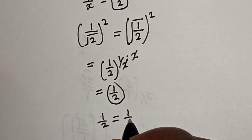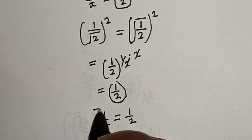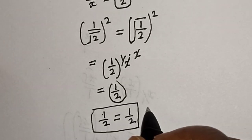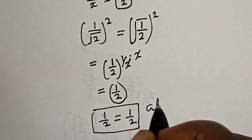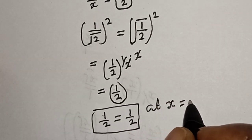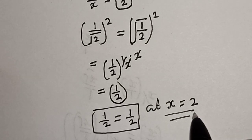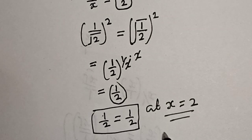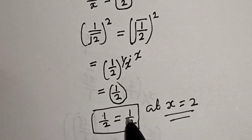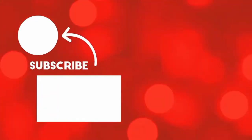Therefore the left hand side is 1 over 2, which equals the right hand side 1 over 2. We satisfy the given equation at s equals 2. If you enjoyed the class, please don't forget to like, share, comment and subscribe. Thank you.